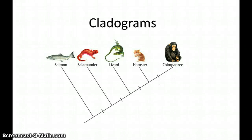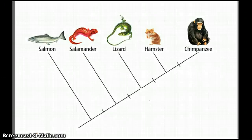A cladogram is an image or diagram that shows us an evolutionary relationship between different organisms. Here is a cladogram.